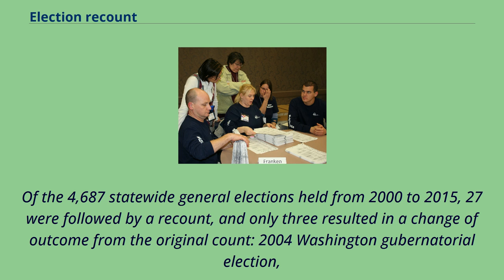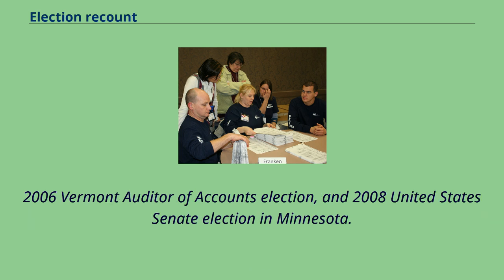Of the 4,687 statewide general elections held from 2000 to 2015, 27 were followed by a recount, and only three resulted in a change of outcome from the original count: the 2004 Washington gubernatorial election, the 2006 Vermont auditor of accounts election, and the 2008 United States Senate election in Minnesota.